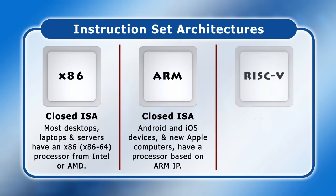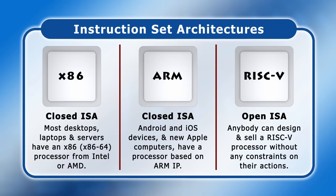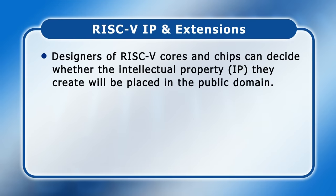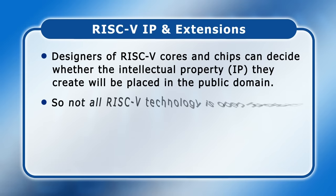In contrast, the RISC-V ISA is free and open. This means that anybody can design and sell a RISC-V processor core without any constraints on their actions. The designs for RISC-V cores may then be used in the design of microcontrollers, CPUs, systems on a chip, or other components, which may in turn be manufactured in a fabrication plant. Whilst the RISC-V ISA is free and open, it's up to the designers of RISC-V cores and chips to decide whether the intellectual property they have created would be placed in the public domain, meaning not all RISC-V technology is open hardware.